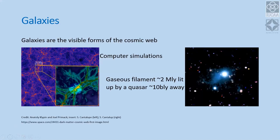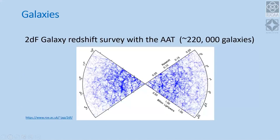This is a computer simulation. This is a real distribution of galaxies — a very small region of the sky called the two degree field, observed with what was then called the Anglo-Australian telescope. This locates the positions of about 222,000 galaxies, located in both space and time — as time goes backwards, larger red shifts. As you go higher in redshift, you go back in time as well.